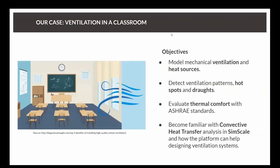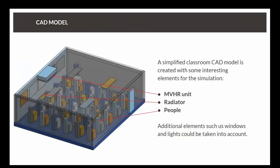The objectives for this project would be mainly being able to model these ventilation systems, heat sources in a room. Once we are able to model these, we will focus on the results to detect any air patterns in the ventilations, any hot spots in the room, any drafts, and also take a look at the ASHRAE standards regarding thermal comfort in a room. And from a more general point of view, becoming familiar with this convective heat transfer analysis type in SimScale and show you what we are able to do and offer with this analysis type.